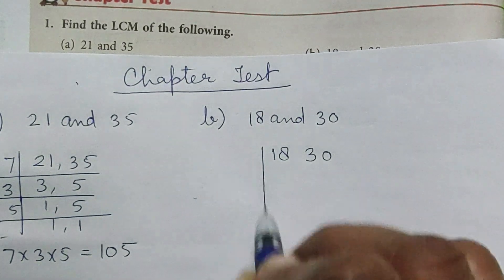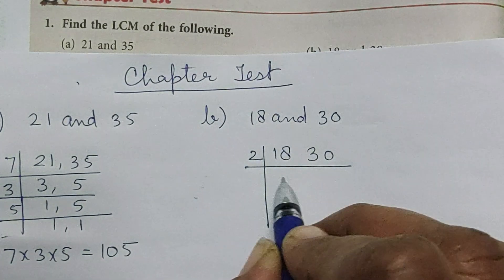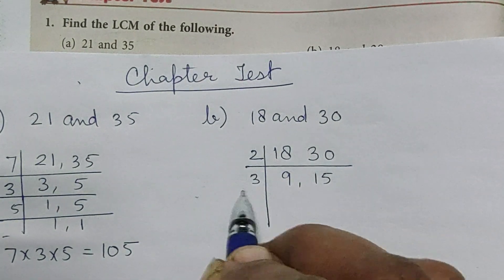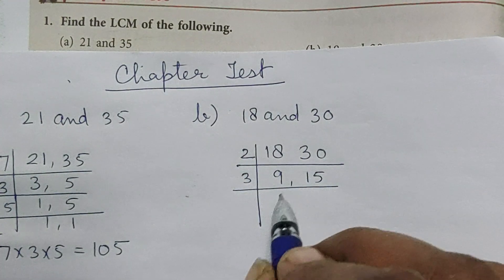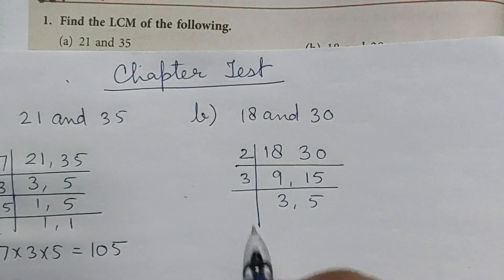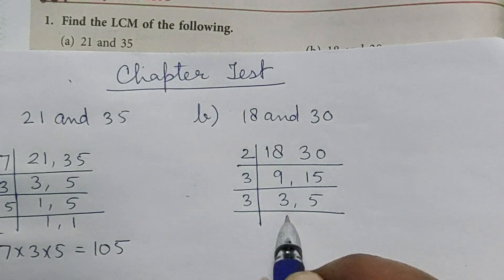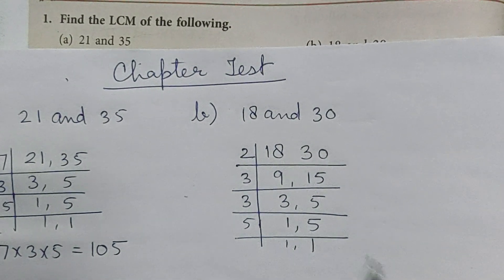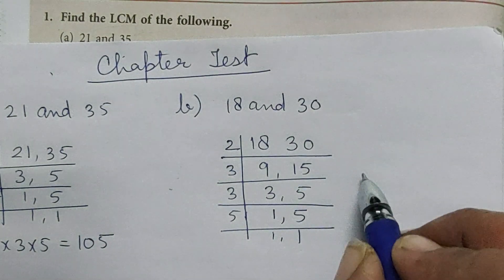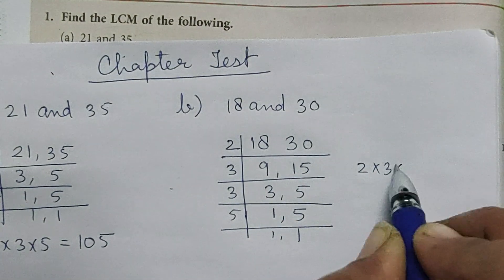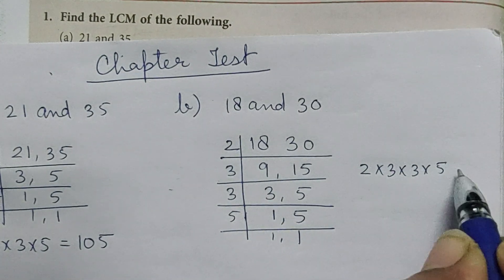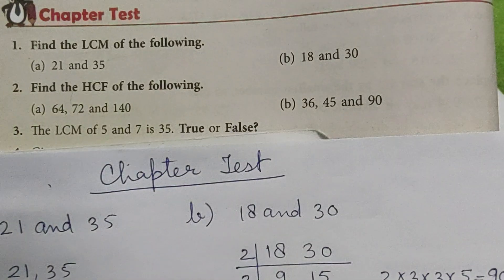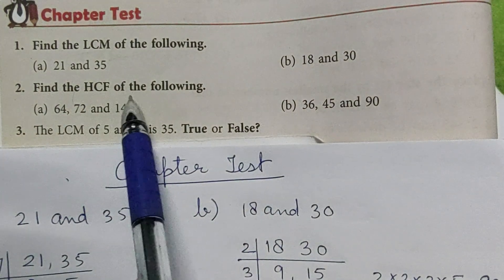Now for 18 and 30: divide both by 2 to get 9 and 15, then by 3 to get 3 and 5, then 3 ones are 3 and 5 ones are 5. So the LCM is 2 × 3 × 3 × 5 = 90. Next question: find the HCF of the following.